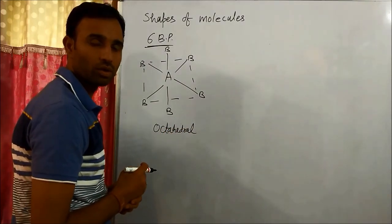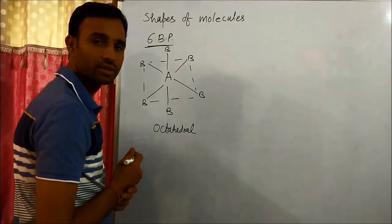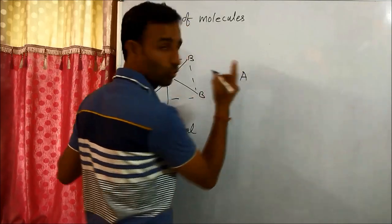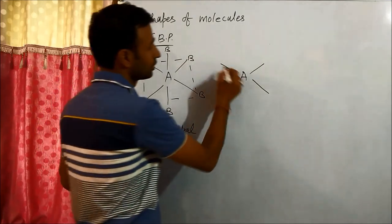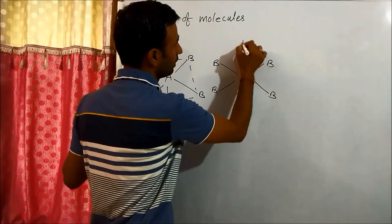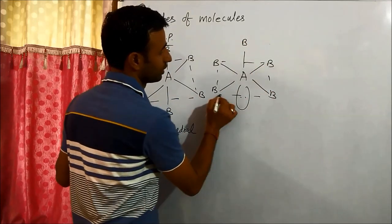The geometry is octahedral and all the angles are at 90 degrees. Now if we have one lone pair, because all the positions are equivalent, one lone pair occupies one of the positions and it becomes square pyramidal.